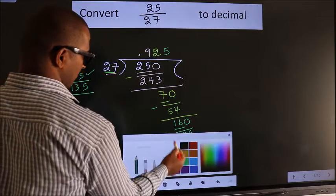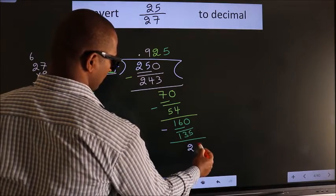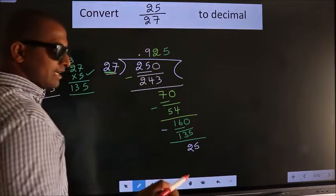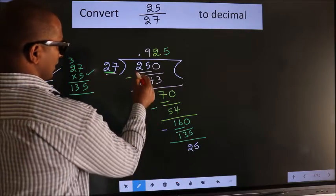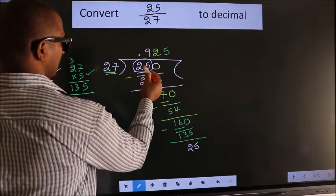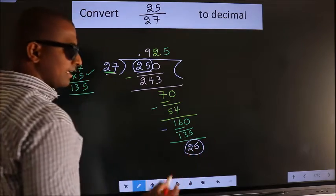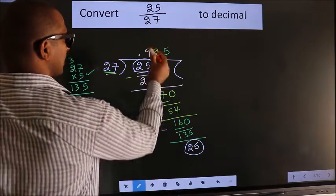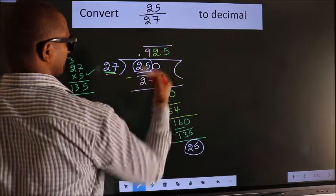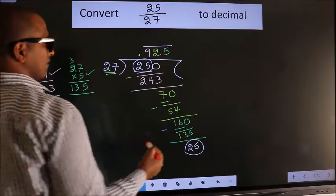Now we subtract. We get 25. Now here you observe: earlier we had 25, we got 25 again. That means we get a bar on these three numbers.